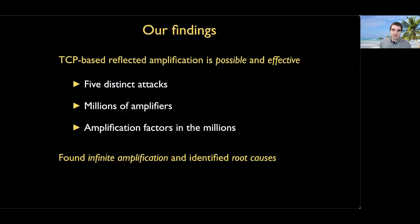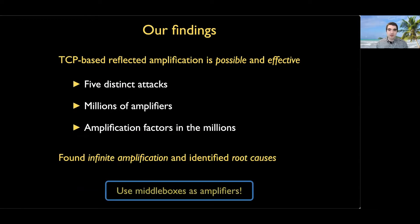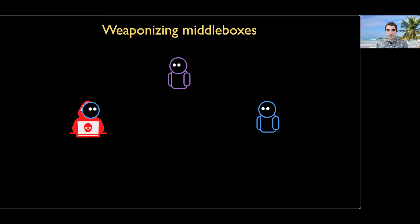In this presentation we're going to show that TCP-based amplification is not only possible, it can also be startlingly effective. We're going to present five distinct attacks that make this possible. I'll show how we found millions of IP addresses that can act as amplifiers, discuss the enormous amplification factors we discovered, and in some cases we actually found infinite amplification. The insight that enabled this work is that networks have grown more complicated since we last reasoned about TCP amplification, and we can use middleboxes themselves as amplifiers.